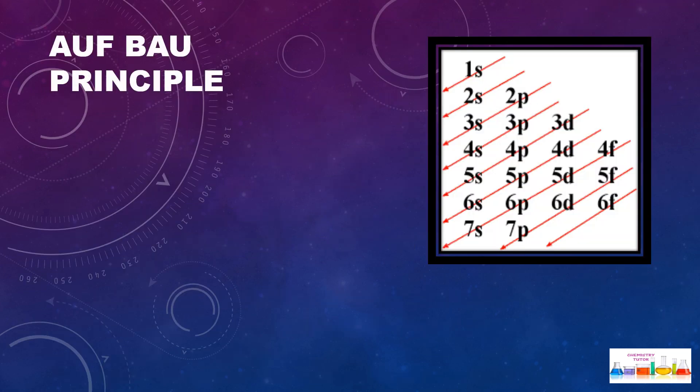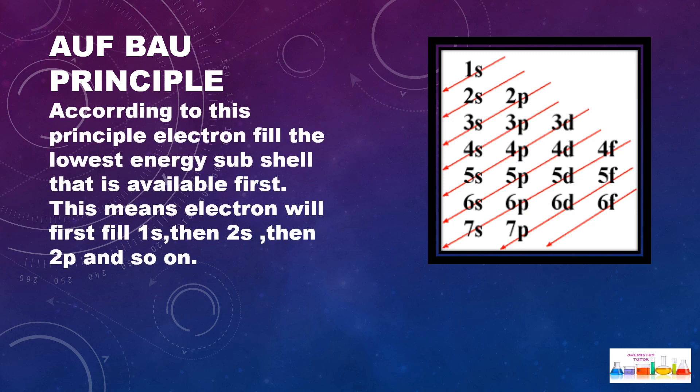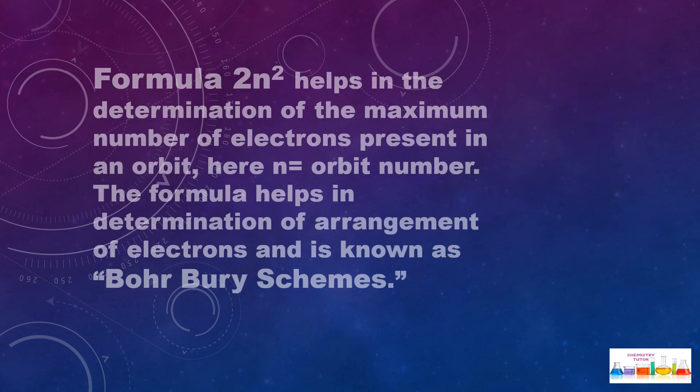Aufbau principle: according to this principle, electrons fill the lowest energy subshell that is available first. This means electrons will fill first 1s, then 2s, then 2p, and so on.